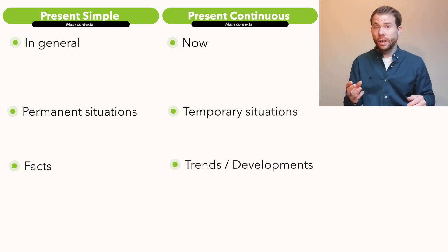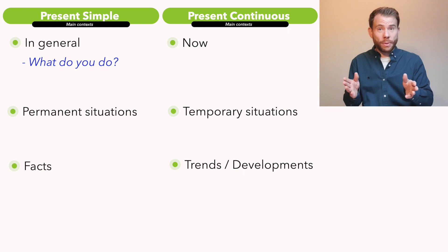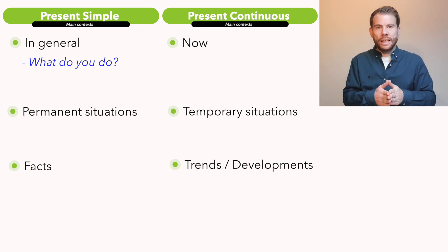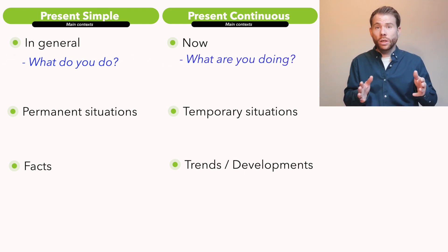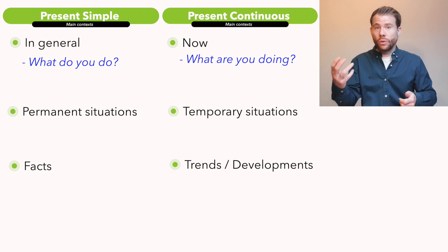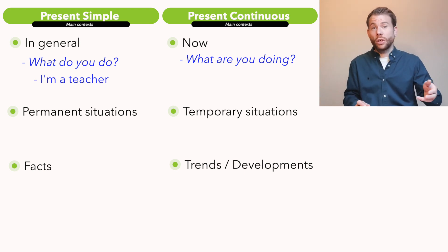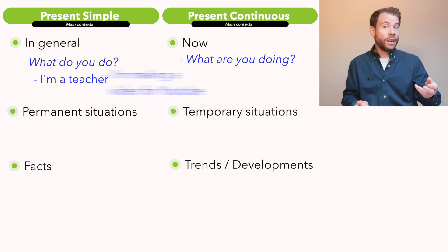So as always, we need some examples to clarify when we use these tenses. For the present simple, when you're speaking in general, a common question is: 'What do you do?' This can be confusing for some people. Essentially this question is saying what do you do in general, so for most people the response is their job — the question is essentially 'What is your job?' In contrast, the present continuous version would be: 'What are you doing?' — and a response could be 'I'm making a video for YouTube.'